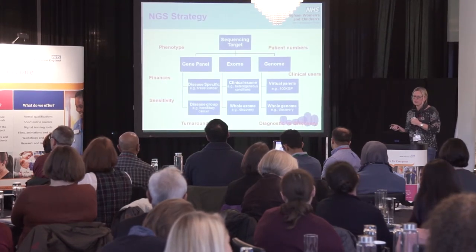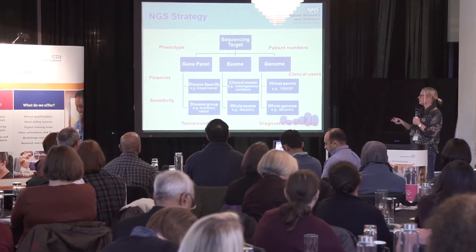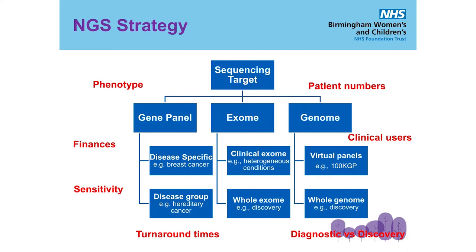To recap on strategy from the beginning: you need to take into account the phenotype and whether it's well described, how much money you have, what level of sensitivity you need — for cancer, for example, we need very high sensitivity when looking at clones in tumours — and patient numbers. We can employ gene panels, appropriate for specific presentations such as breast cancer where we only want to look at a limited number of genes. For more heterogeneous conditions such as developmental delay, it's more appropriate to sequence the coding region — a clinical exome. Or, as the 100,000 Genomes Project does, go straight to the entire genome and then select virtual panels from that.